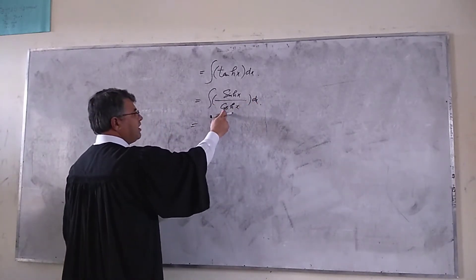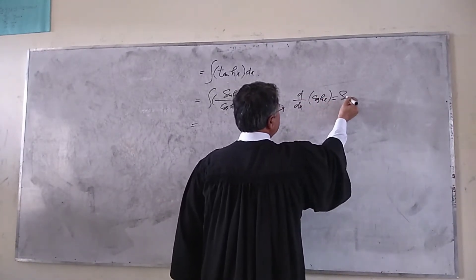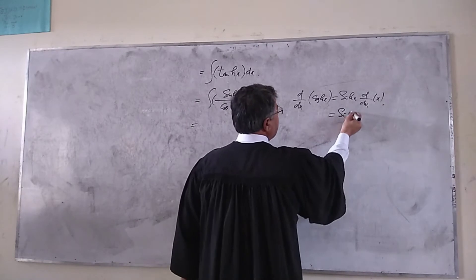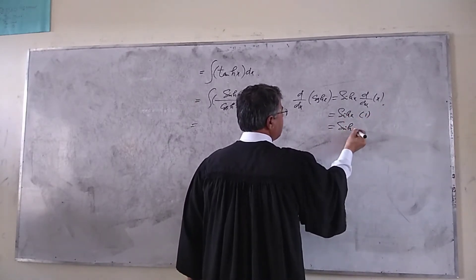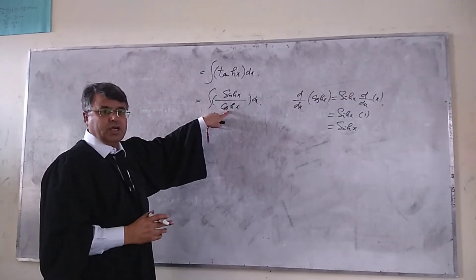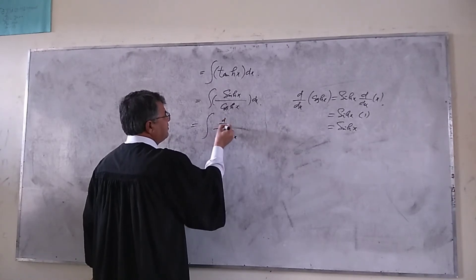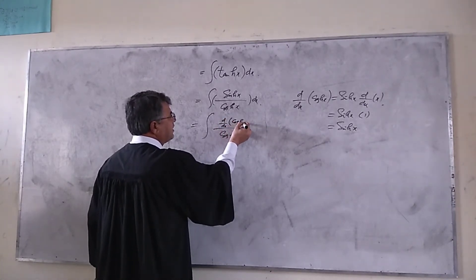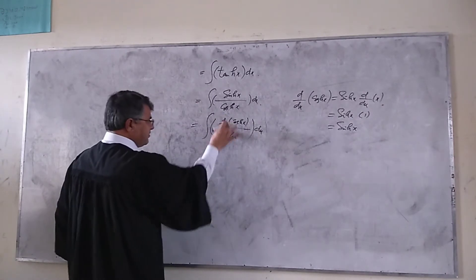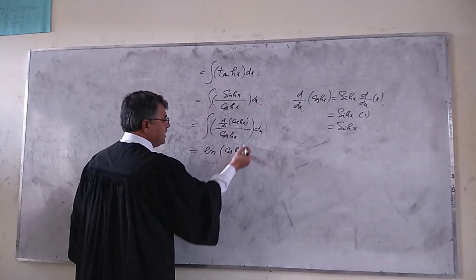Now the derivative of the denominator: the derivative of cosh(x) is equal to sinh(x), multiplied by the derivative of x, which equals sinh(x) times one, which is sinh(x). So the function is in simplest form, and the derivative of the denominator cosh(x) equals the numerator. Therefore the integration of this function is equal to log of cosh(x).